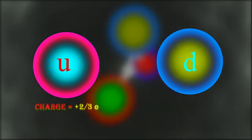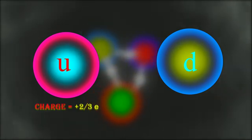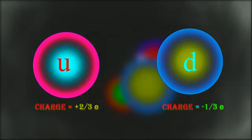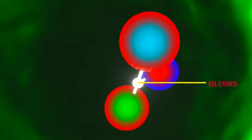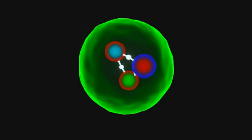If we talk about the proton, it is made up of two up quarks and one down quark held together by particles called gluons. Now we will calculate the charge of the proton according to the charges of the quarks.